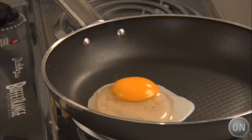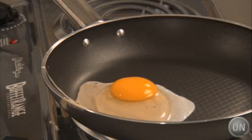In egg whites, the change from translucent to opaque is due to coagulation. So is the skin on the surface of curdled milk, or the increase in firmness of custard.